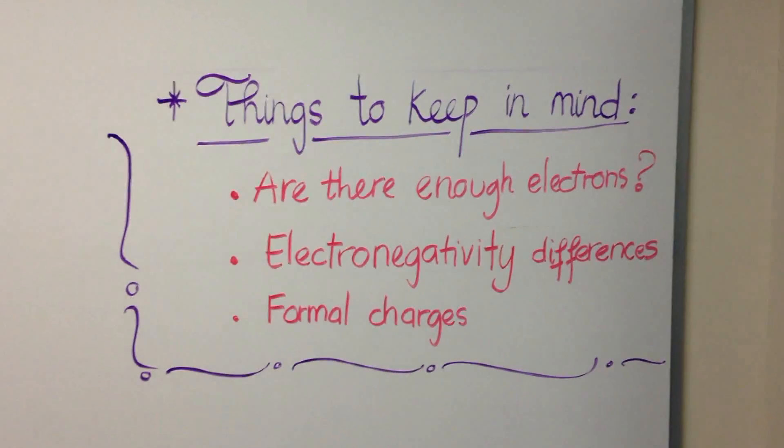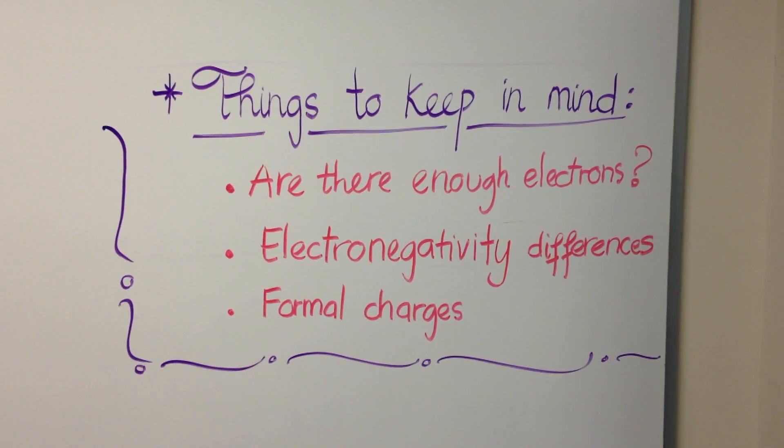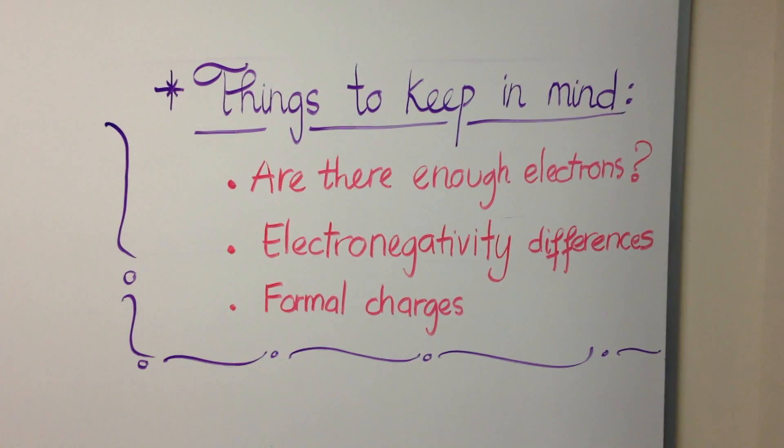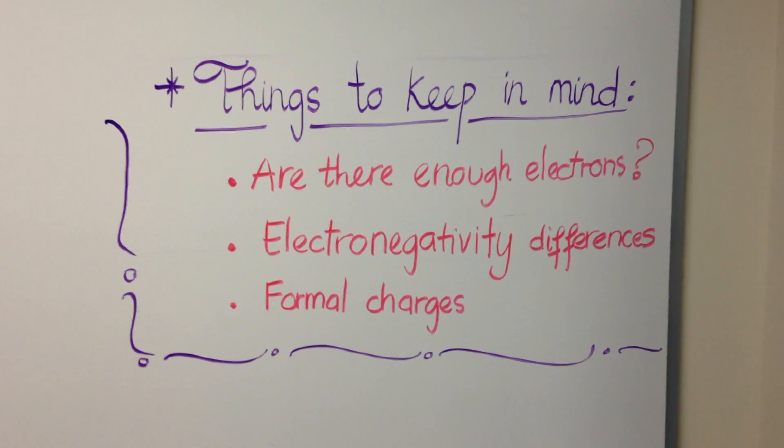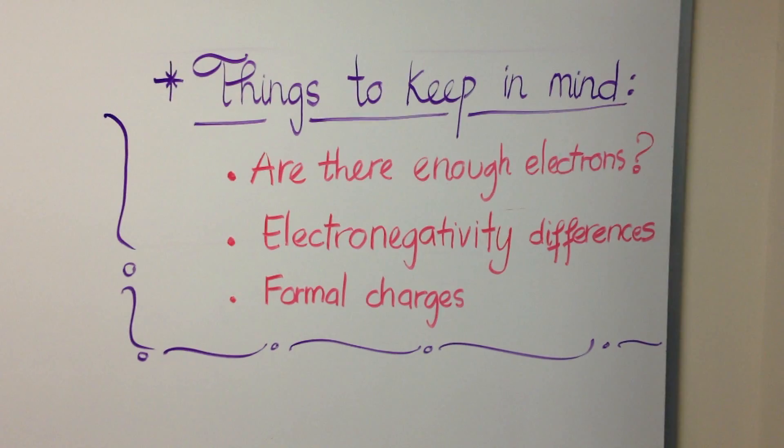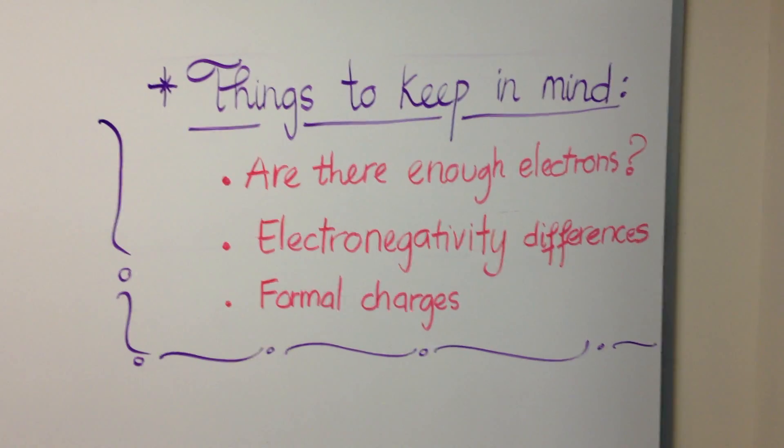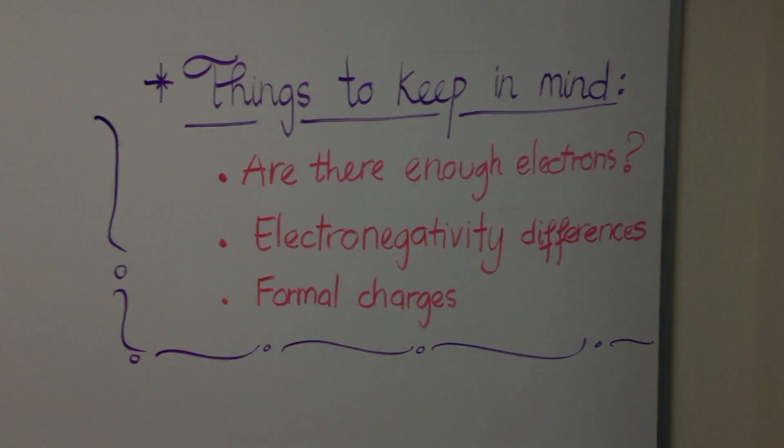With all this in mind, here are a few things to keep in mind when you are approaching molecules that you think might be electron deficient. First, are there enough electrons? If there aren't enough electrons in the molecule to reach eight electrons, you might be looking at an electron-deficient central atom.